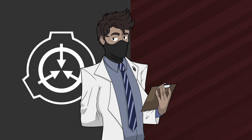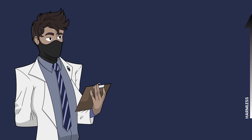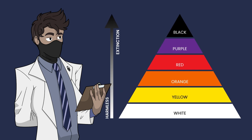Both the SCP Foundation and the RPC Authority use their own unique classification system to identify and define their anomalies in terms of containment difficulty, with the exception of the RPC Authority which uses a color discriminator to distinguish an anomaly's lethality rating. Here's the spectrum I've shown previously — each color represents the danger, and as you go above one, it becomes much, much more dangerous.